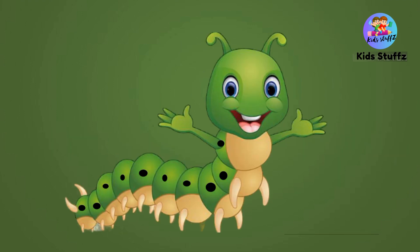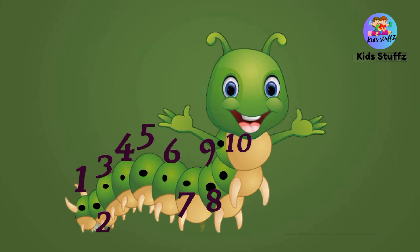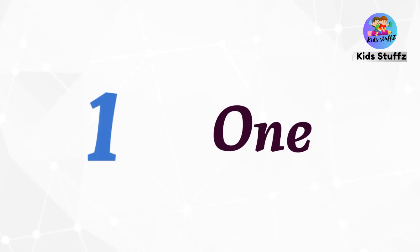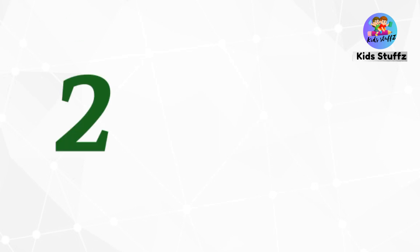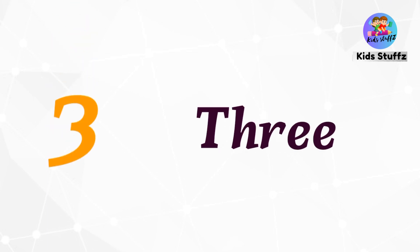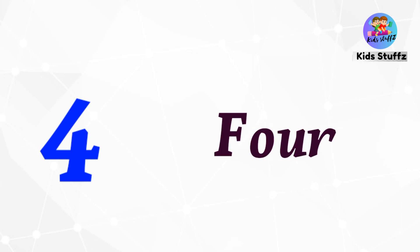Let's count the caterpillar dots. One, two, three, four, five, six, seven, eight, nine, ten — ten dots. Let's say the numbers with the names. One — O, N, E — one. Two — T, W, O — two. Three — T, H, R, E, E — three. Four — F, O, U, R — four.